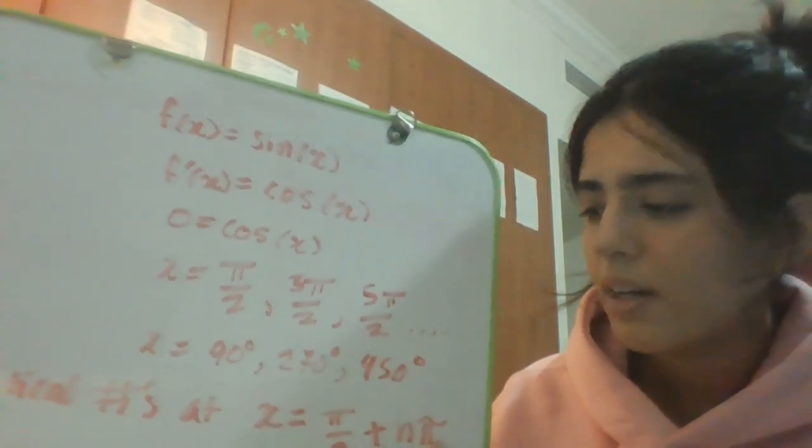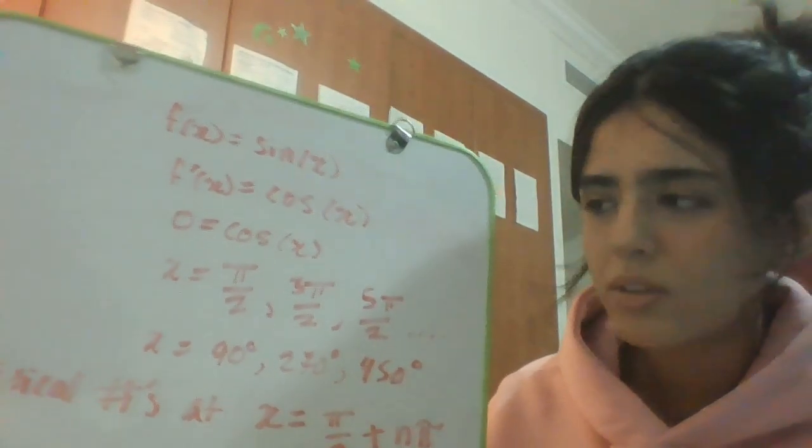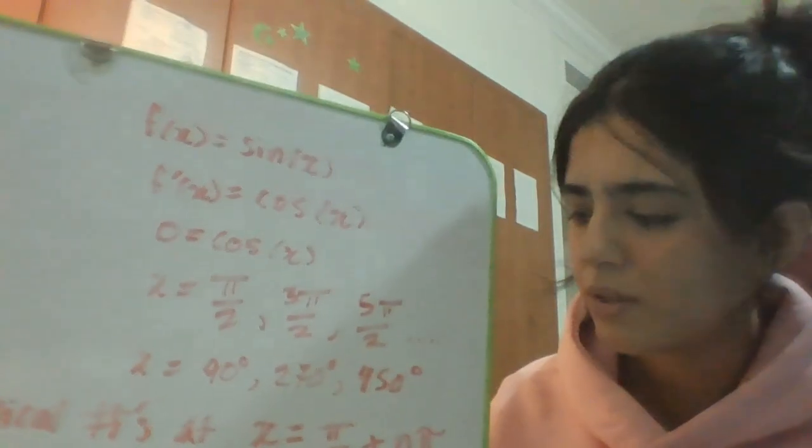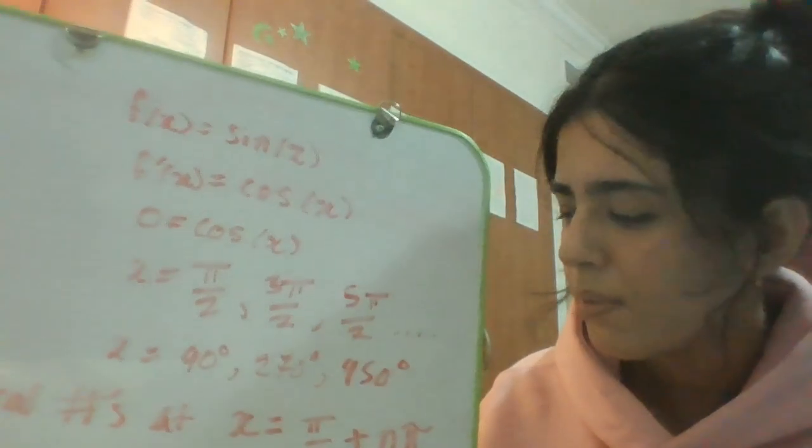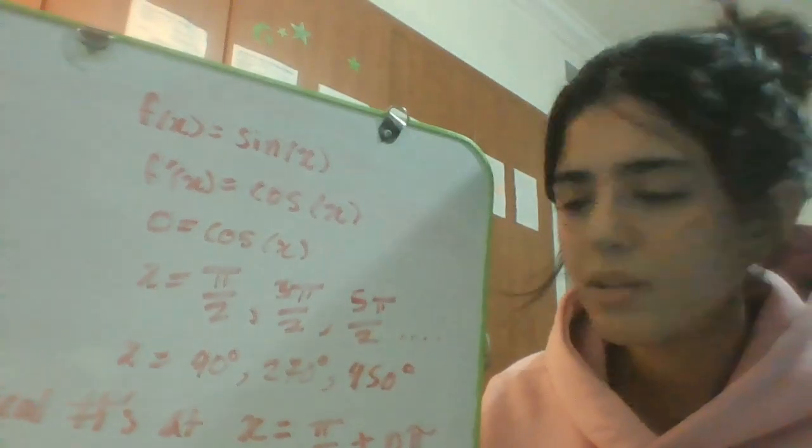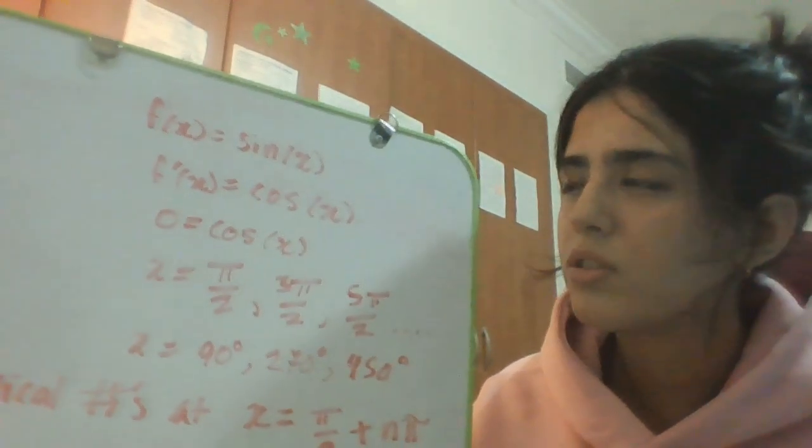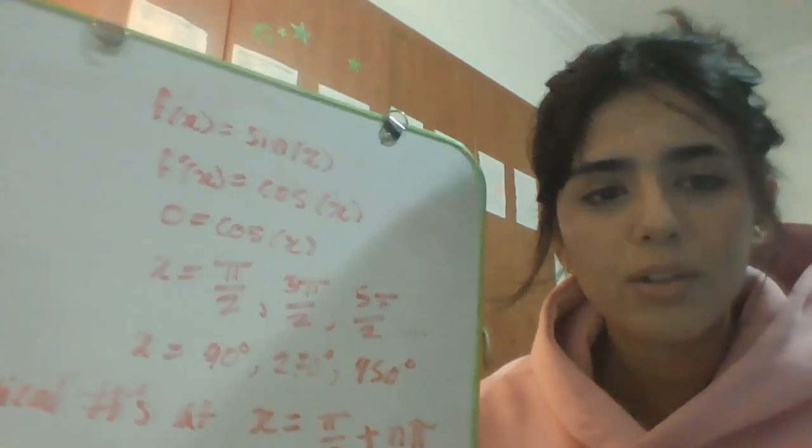A general way to write this is π/2 + nπ. This expression is going to give us all of our critical numbers because you can substitute n as any number and it would still give us a critical number. So yeah, that's the trig function critical point solved.